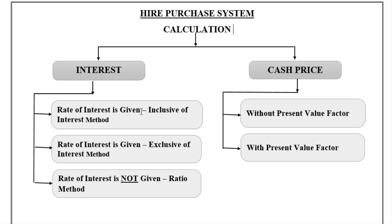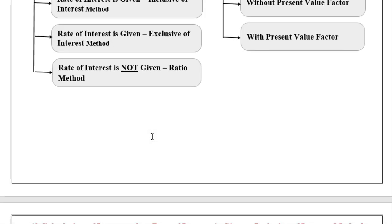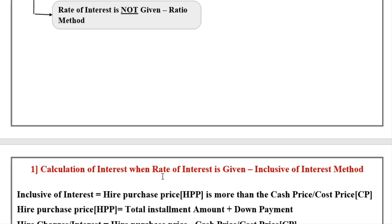The first method is when the interest rate is given and that is the inclusive of interest method. The second is when the interest rate is given but it is the exclusive of interest method. The third is when the rate of interest is not given. Now for interest calculations, we take the first one: rate of interest is given, that is the inclusive of interest method.